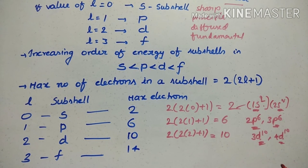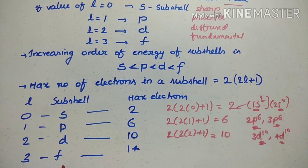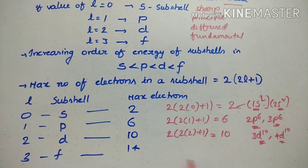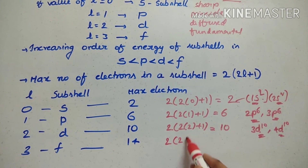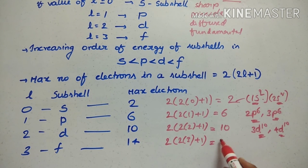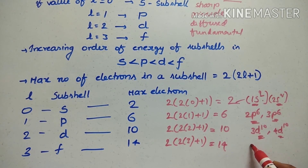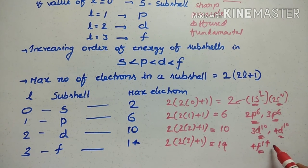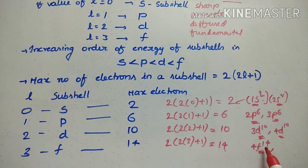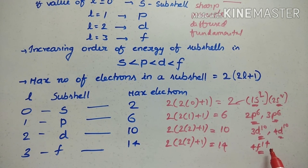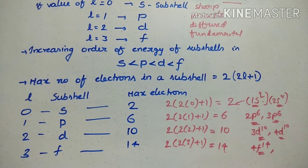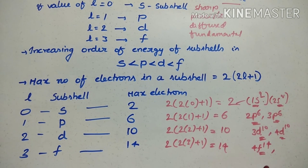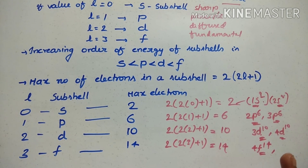If l equals 3, the subshell is named f, and the maximum electrons equal 2 into (2 times 3 plus 1) equals 14 electrons, giving 4f14. So the azimuthal quantum number describes the spatial distribution of electrons and tells us the name of the subshell: l equals 0 is s, l equals 1 is p, l equals 2 is d, and l equals 3 is f.